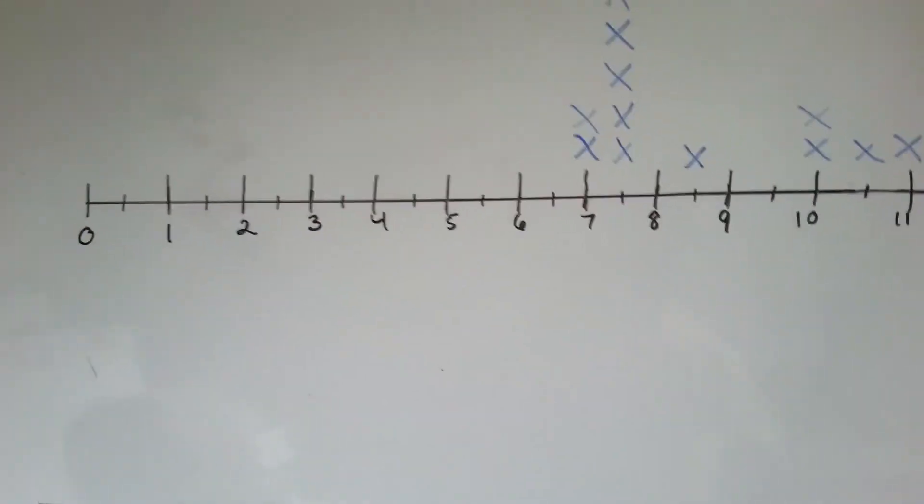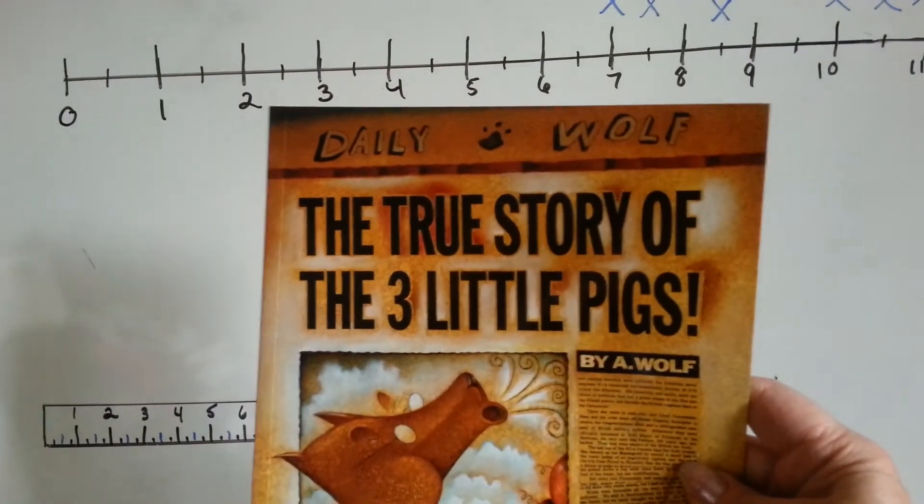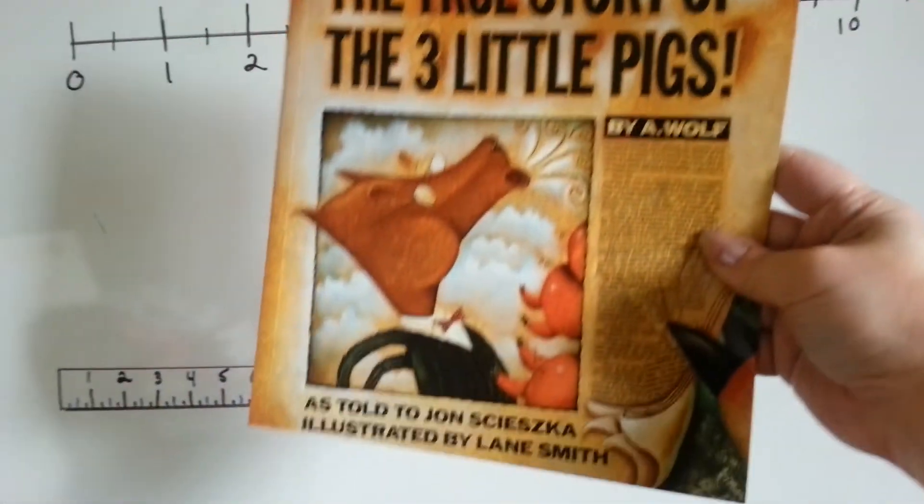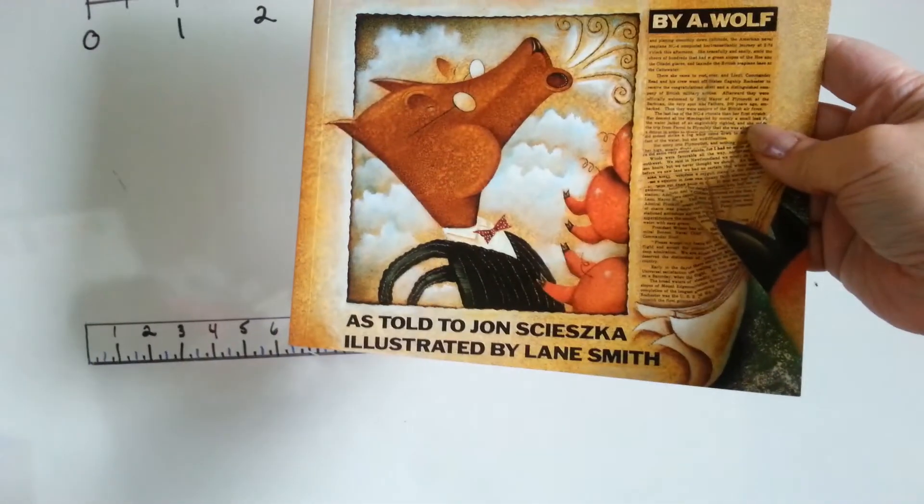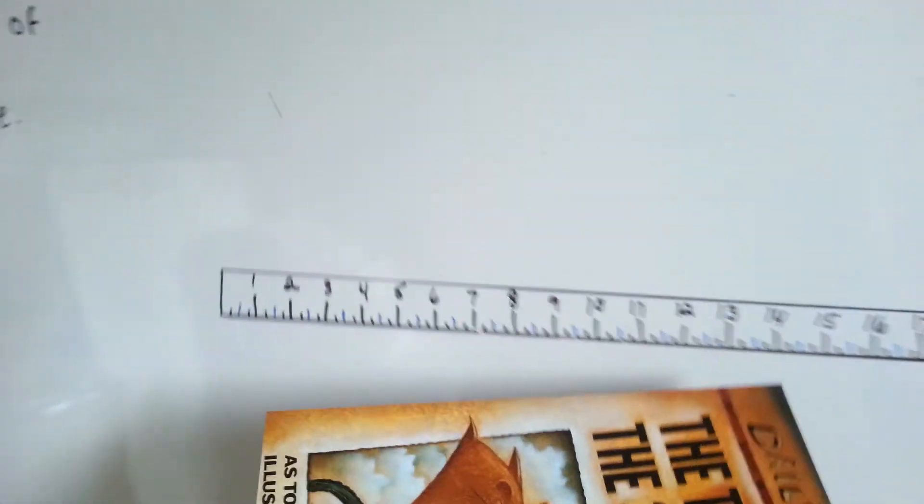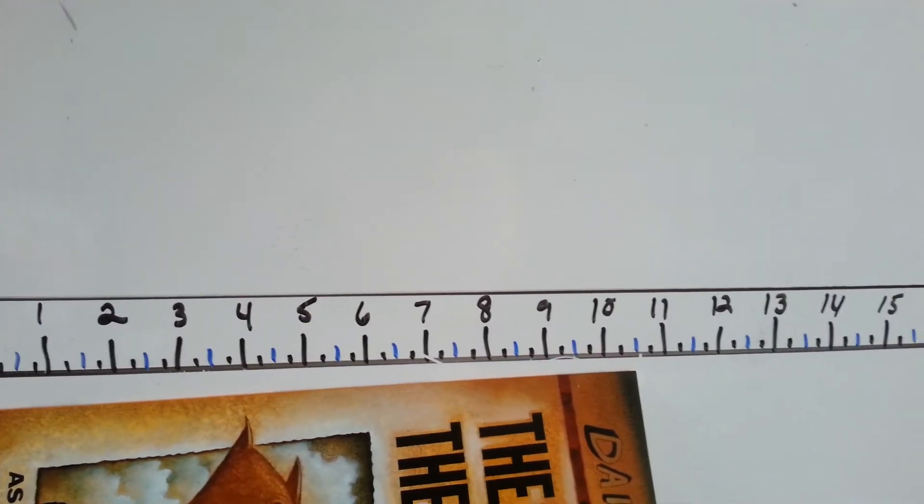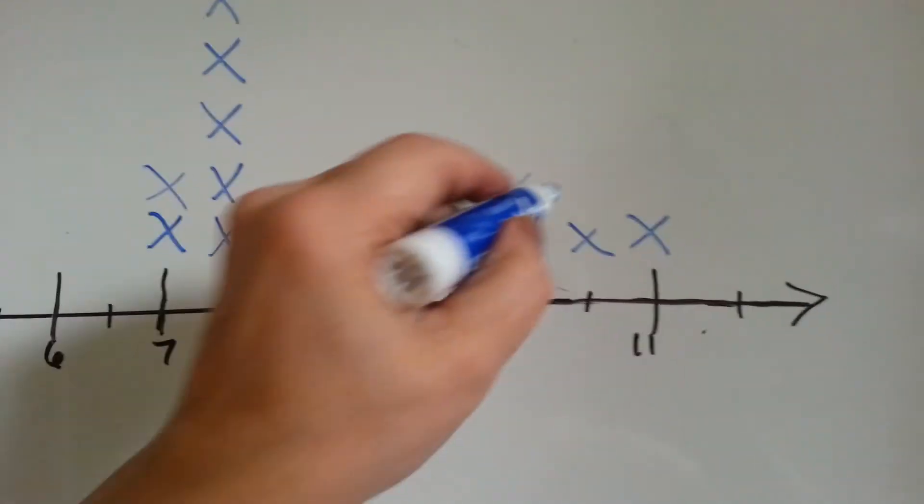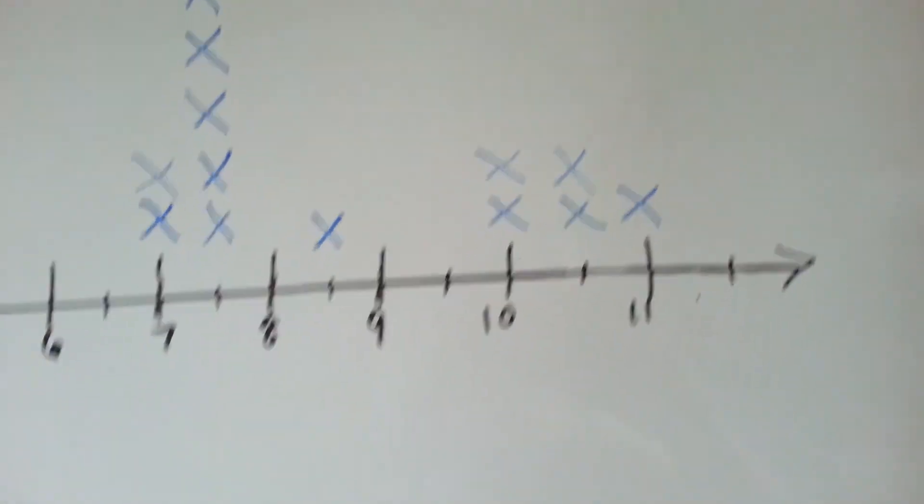We've only got two more books left. The True Story of the Three Little Pigs. Let's measure the spine. And it's 10 and a half inches. I'm going to put an x by 10 and a half.